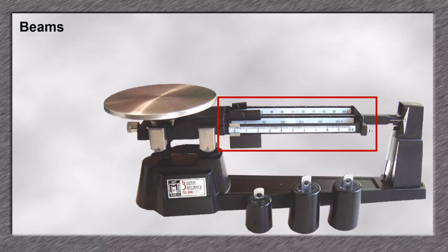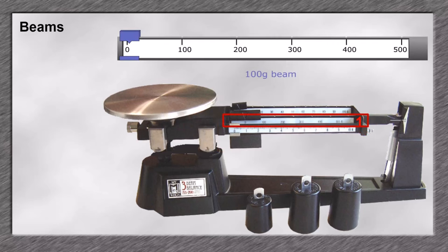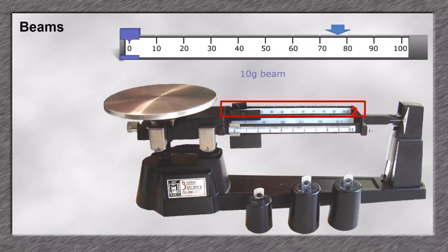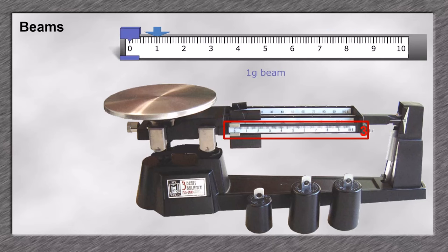A triple beam balance has three beams. Each beam has specific standard mass graduations. The highest beam has 100 gram graduations, the second beam has 10 gram graduations, and the third beam has 1 gram graduations with a tenth of a gram graduations in between.